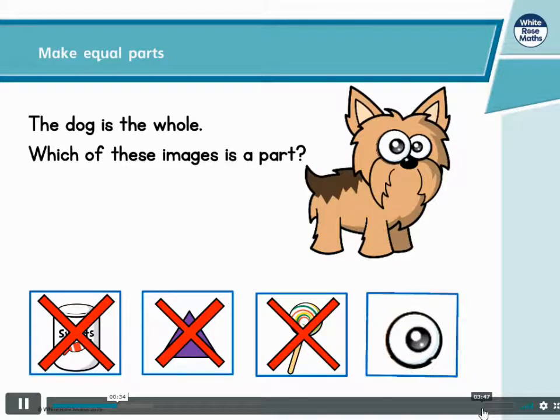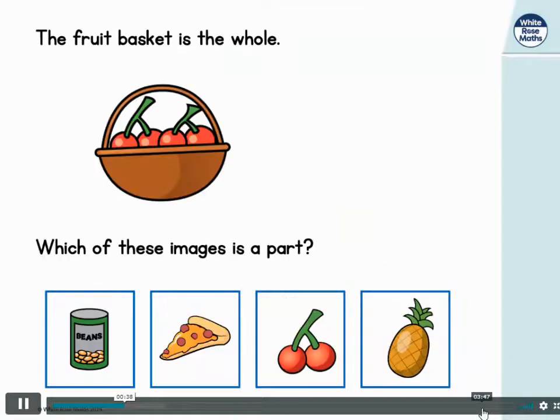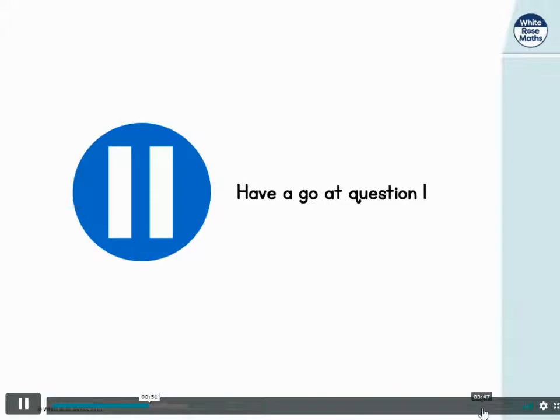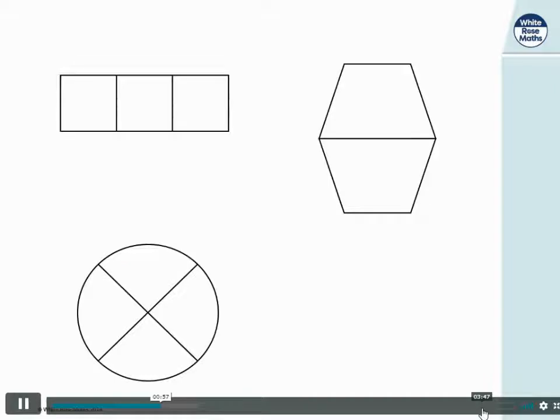In this case the fruit basket is the whole. So which of these images is a part of the whole? Of course, it's those yummy cherries. Pause here and have a go at question one.